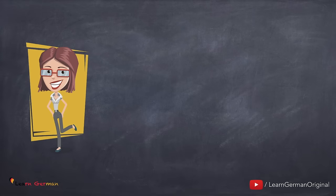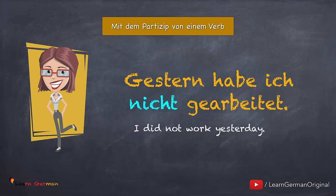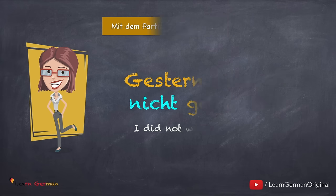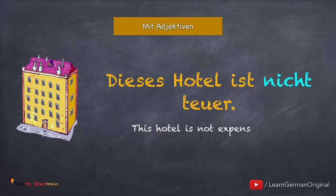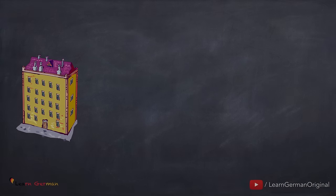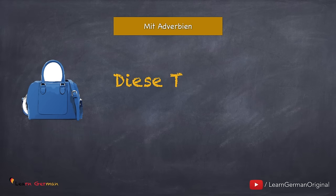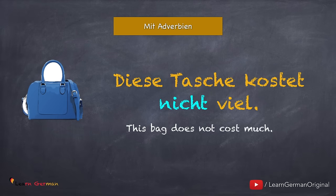Oder wenn es das Partizip von einem Verb gibt: Gestern habe ich nicht gearbeitet. Hier steht NICHT vor dem Partizip. Auch wenn es Adjektive gibt: Dieses Hotel ist nicht teuer. Hier steht NICHT vor dem Adjektiv. Oder wenn es Adverbien gibt: Diese Tasche kostet nicht viel. Hier steht NICHT vor dem Adverb.